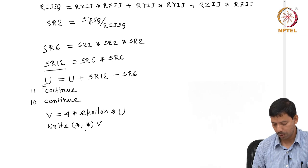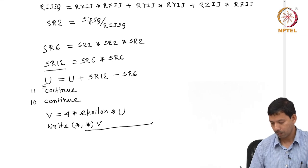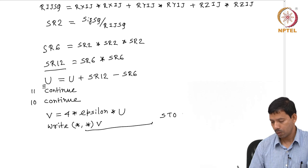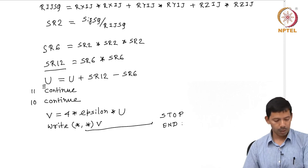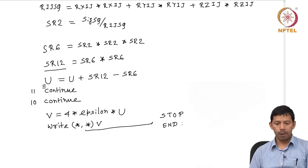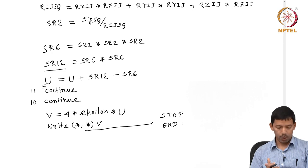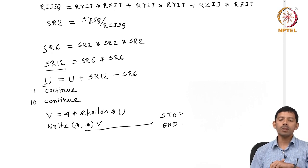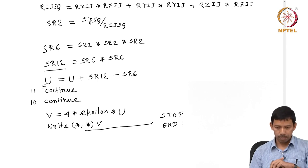Finally, I have two more statements: stop and end. That completes the Fortran 77 code to calculate the Lennard-Jones potential of an n-particle system.